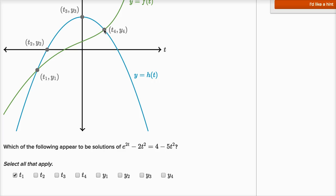So t sub 4, since f of t and h of t equal each other when t is equal to t sub 4, these two things are going to equal each other when t is equal to t sub 4.